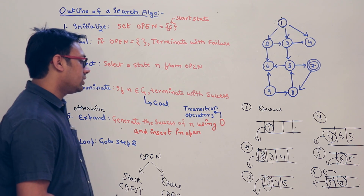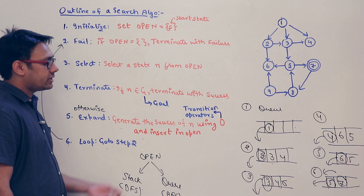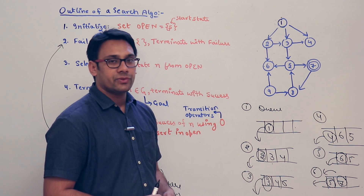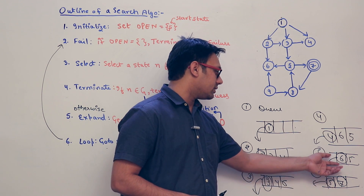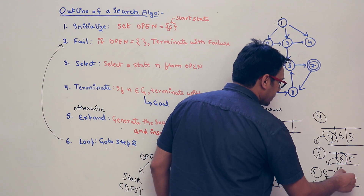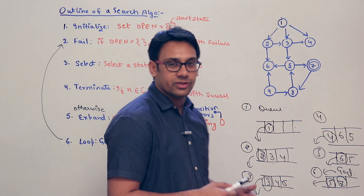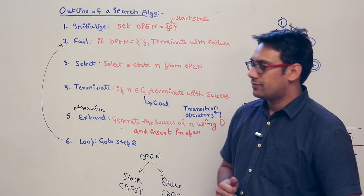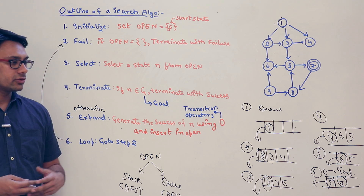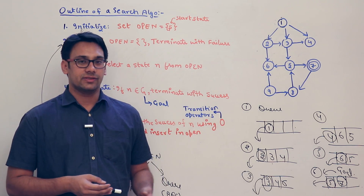Every time we take an element out of the queue we check whether it is a goal state. When we take 7 out of the queue, 7 is the goal state — we have reached the goal. These are the two basic algorithms we study to perform depth first search and breadth first search, to find the solution to problems defined in terms of state space. This is the first algorithm we study; now let us move on to the basics of this kind of algorithm and discuss them in more detail.